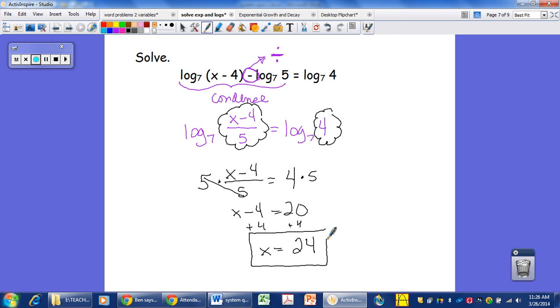So in order to get it in the form that we want it with one log and one log, you're going to have to do some condensing. So remember those properties of logs. Subtraction becomes division, addition becomes multiplication. Products become powers so that we can have one log on both sides.